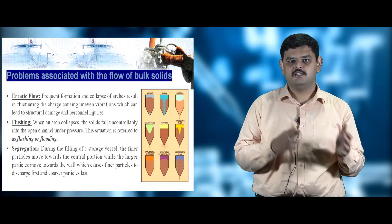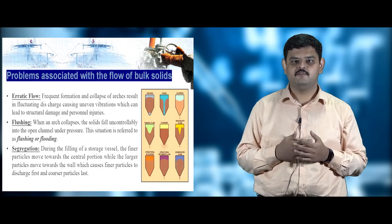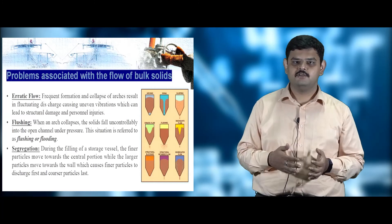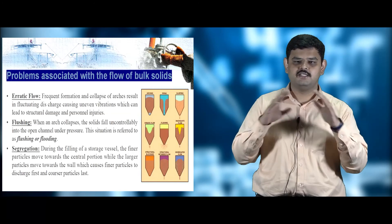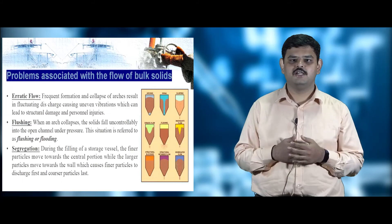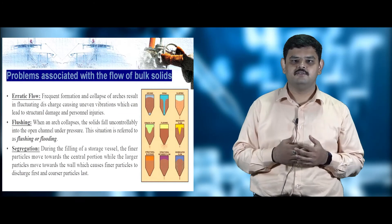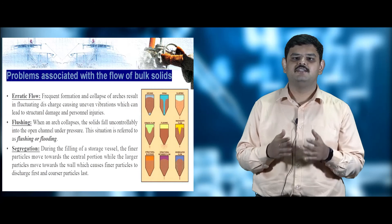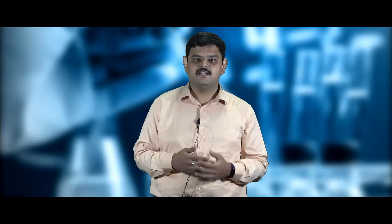Frequent formation and collapse of arches causes fluctuating discharges, known as erratic flow, which leads to personal injuries and structural damage. Flushing occurs when the arch inside the container breaks, allowing the entire mass of solids to flow continuously — this is also known as flooding. In segregated flow, while filling the container, fine particles move towards the center and coarse particles move towards the stagnant zone.